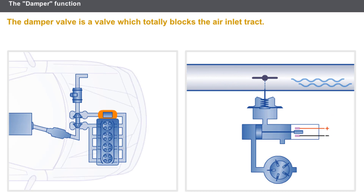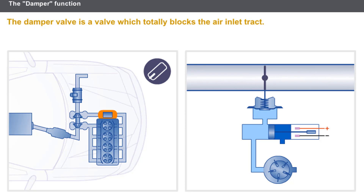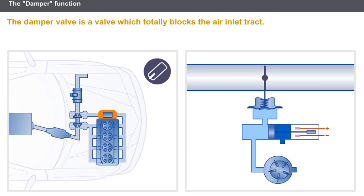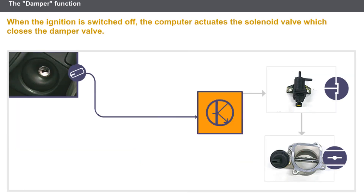The damper valve is a valve which totally blocks the air inlet tract. When the engine stops, the damper valve cuts the engine air supply. The damper valve prevents vibration caused by residual movement of the engine. The valve is activated via a pneumatic control. A solenoid valve authorizes the vacuum, which closes the valve. A vacuum reservoir is fitted to the vacuum circuit. The reservoir contains the amount of vacuum required to close the valve. The ignition switch informs the computer that the ignition is switched off. The computer actuates the solenoid valve, which closes the damper valve.